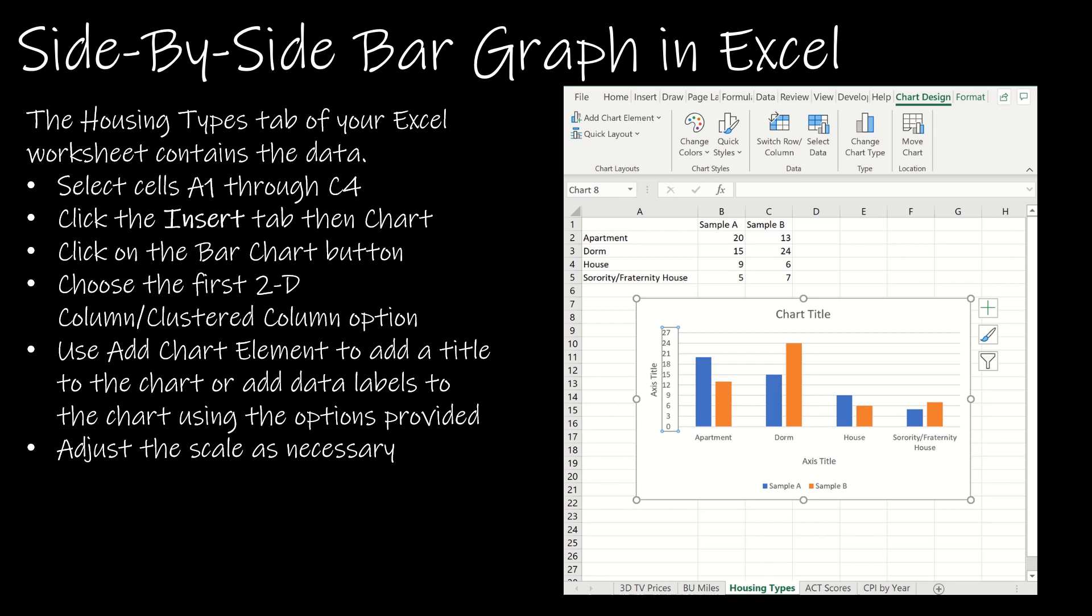The last type of display for qualitative data is a stacked bar graph. There's more than one type, but a stacked bar graph is great for comparing two or more distributions. It's also a great way of comparing the totals of the same variables. On the apartment, the total is about 33, with 20 from sample A, leaving about 13 for sample B.